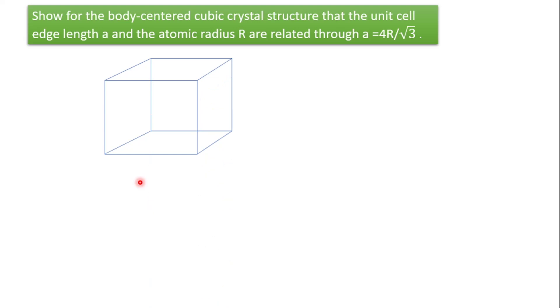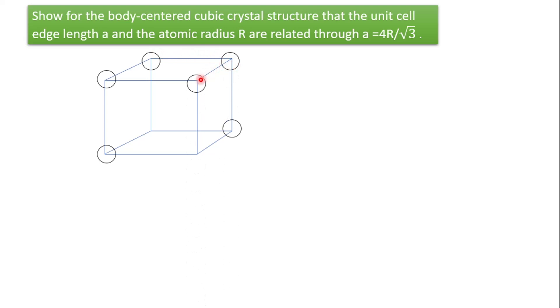The BCC structure is a cube. The BCC is very unique — it has atoms sitting at the lattice points of the unit cell. We have atoms at each vertex: one, two, three, four, five, six, seven, eight atoms sitting at the lattice points. One special thing about BCC is that it also has one atom sitting in the center of the unit cell.